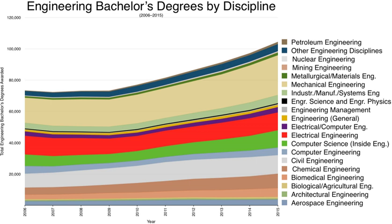Professional engineers are persons accredited by ECSA as engineering professionals. Legally, a professional engineer's sign-off is required for any major project to be implemented, in order to ensure the safety and standards of the project. Professional engineering technologists and professional engineering technicians are other members of the engineering team. Professional certificated engineers hold one of seven government certificates of competency and are registered by ECSA. The categories of professionals are differentiated by the degree of complexity of work: professional engineers solve complex engineering problems, professional engineering technologists and certificated engineers handle broadly defined problems, and engineering technicians handle well-defined engineering problems.